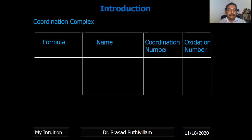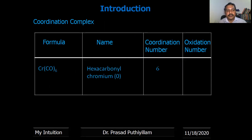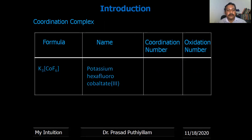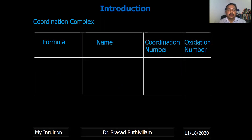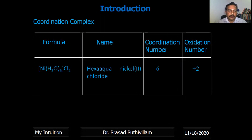One more example: Cr(CO)₆, chromium hexacarbonyl — here the charge is zero, meaning there is no charge on the coordination complex; coordination number is six and oxidation number is zero. K₃[CoF₆], potassium hexafluorocobaltate(III): coordination number six, oxidation number +3. [Ni(H₂O)₆]Cl₂, hexaaqua nickel chloride: coordination number six, oxidation number +2.